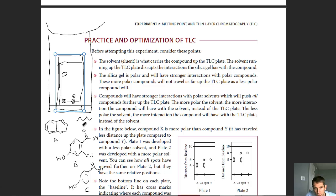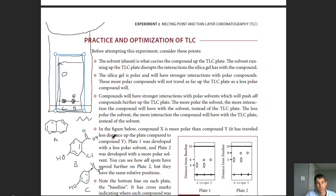Hexanes is a nonpolar organic solvent with a 6-carbon chain. It tries to carry compounds up the plate but cannot disrupt the strong interactions that polar silica gel has with polar compounds. So polar compounds don't travel far up the plate — compound B barely moved — while nonpolar compound C moved pretty far up since it has weak interactions with the silica gel.